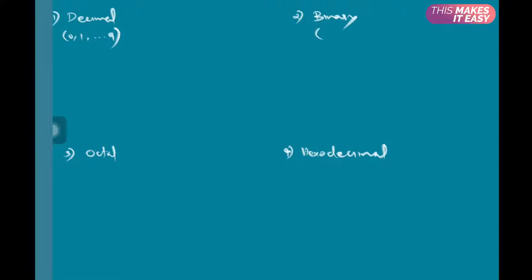Binary uses two symbols: 0 and 1. The octal number system uses 8 symbols: 0 through 7. Whereas the hexadecimal number system uses 16 symbols starting from 0 through 9, then six alphabets A, B, C, D, E, F.